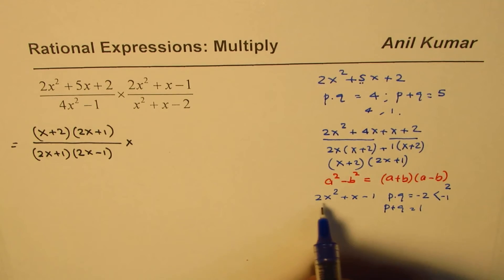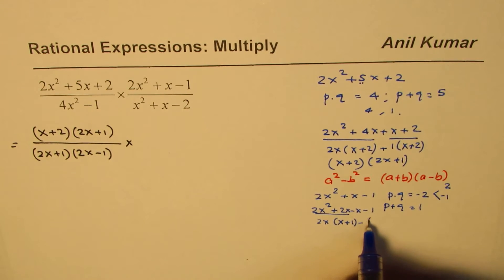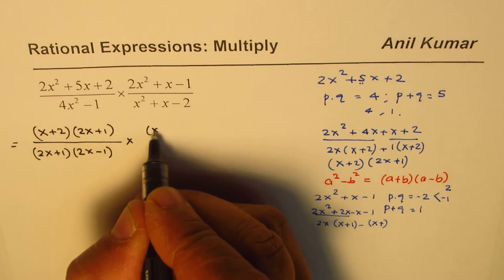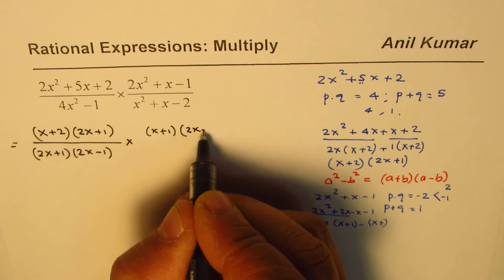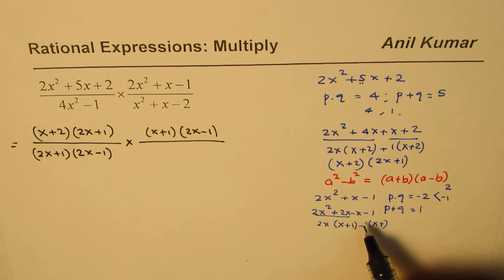You write this as 2x squared plus 2x minus x minus 1, taking 2x common gives us x plus 1 minus common, x plus 1. So, we could factor this as x plus 1 is common. So, we are writing x plus 1 times 2x minus 1, 2x minus 1. So, you may have to review factoring skills for multiplying rational expressions. So, I like you to go through these steps so that your level of confidence is higher on factoring.